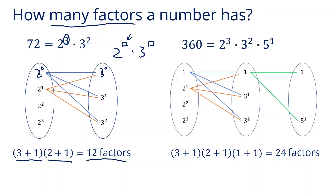So the number of factors for 72 is (3+1) × (2+1) = 12 factors. Let's try another example: 360. Prime factorize it first — 360 = 2³ × 3² × 5¹. The number of factors is (3+1) × (2+1) × (1+1) = 24 factors.